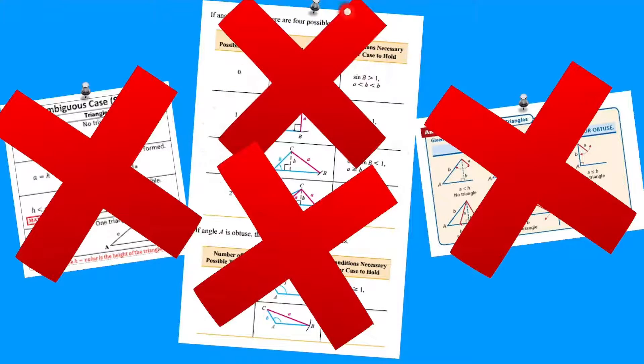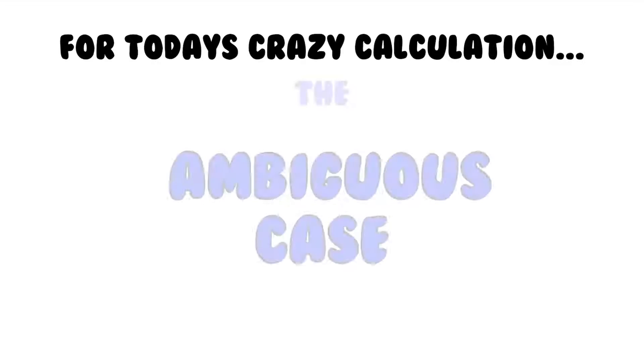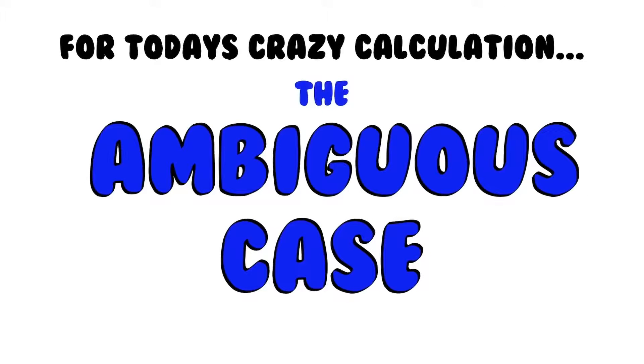This process right here takes two X's to cover up — that's a pretty bad sign. So for today's crazy calculation, we're going to learn about the ambiguous case, but the easy way.